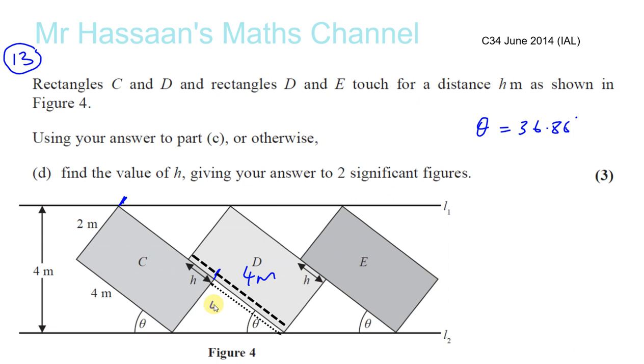And this length here is 2 meters. And this angle is 36.86. So we've got everything we need now to find what H is.